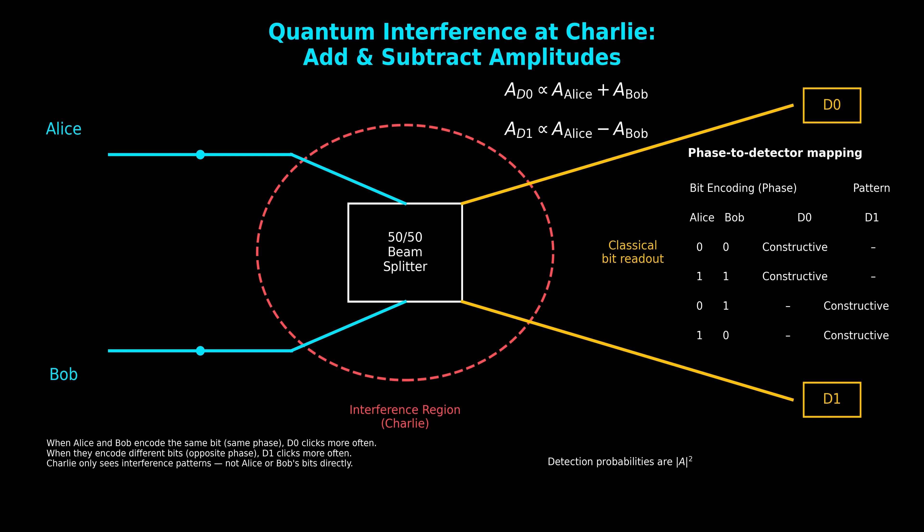The detection probability is at the bottom right. The detection probabilities are proportional to the square of the amplitude magnitude — that's the Born rule. This graph is all about quantum interference: Alice and Bob send independently prepared qubits, Charlie mixes them through a beam splitter, their amplitude phases determine the click pattern, and from that click pattern we learn only whether Alice and Bob matched. Nothing more. This is why Charlie can be completely untrusted — he never gets access to the actual key.